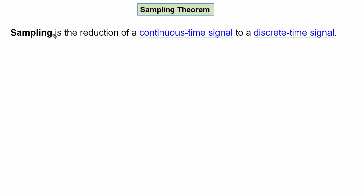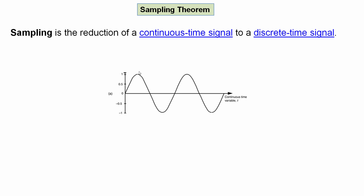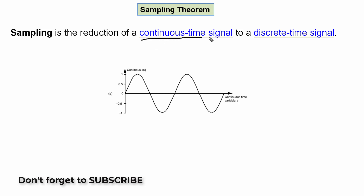Sampling is the reduction of a continuous time signal to a discrete time signal. This is the continuous time signal, and this is the discrete time signal.